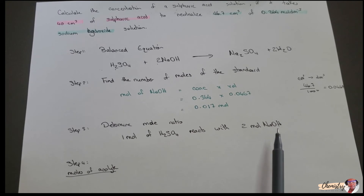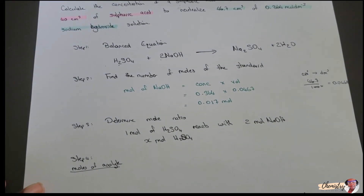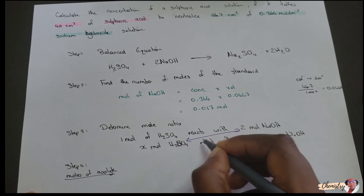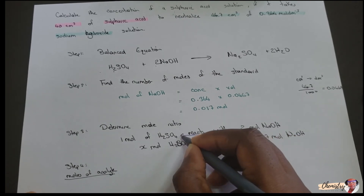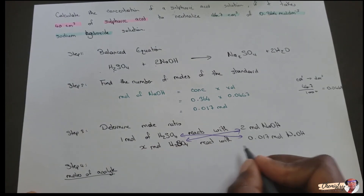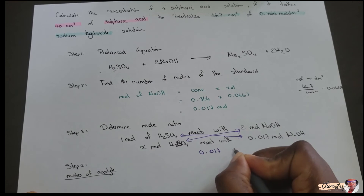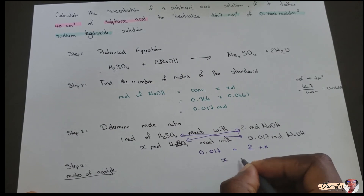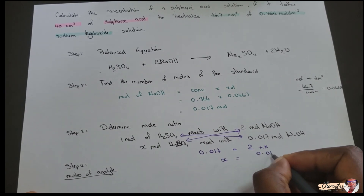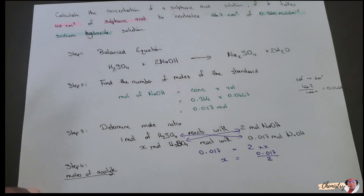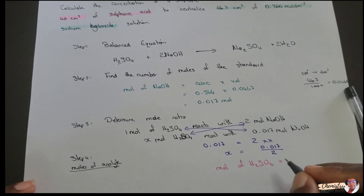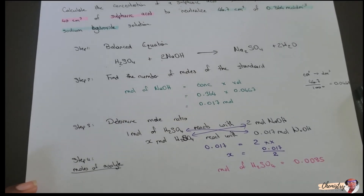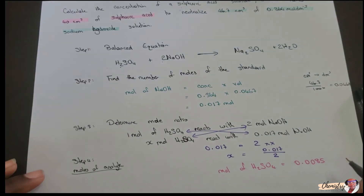In step four we find the moles of the analyte using the mole ratio. We don't know how many moles of sulfuric acid we have, but we know the moles of sodium hydroxide that reacted. Cross-multiplying: 1 × 0.017 = 2 × x, which means x = 0.017 ÷ 2. Solving that, the moles of sulfuric acid equals 0.0085, which we can write in standard form as 8.5 × 10⁻³ moles.